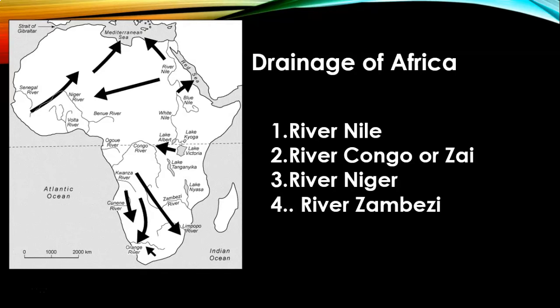River Zambezi. The Zambezi River is the fourth longest in Africa. It rises in northwestern Zambia, is about 2,574 kilometers long, and drains into the Indian Ocean. The world-famous Victoria Falls is formed by the Zambezi, at a height of 108 meters. It is called Southern Africa's river of life. The Limpopo and the Orange are the other important rivers of Africa.